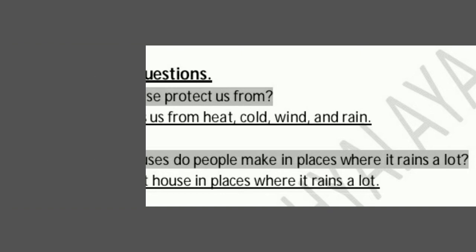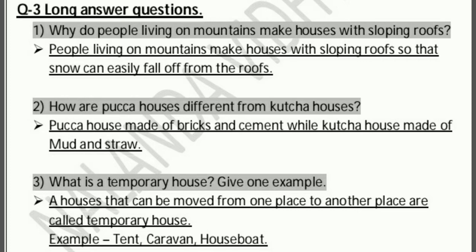Long answer questions. First: why do people living on mountains make houses with sloping roofs? Answer: people living on mountains make houses with sloping roofs so that snow can easily fall off from the roofs. Sloping roof दोनों तरफ से झुका हुआ होता है, इसलिए जैसे snow गिरता है वो सीधे नीचे जमीन पर गिर जाता है.